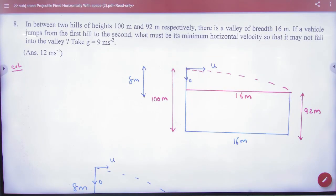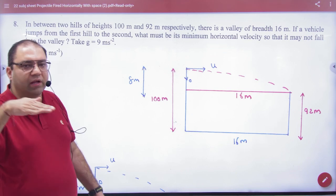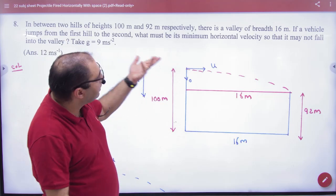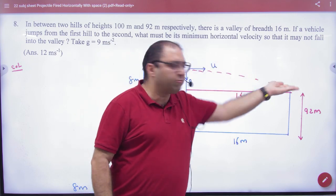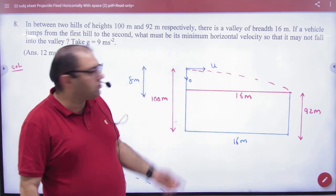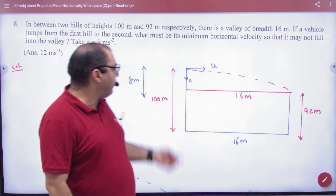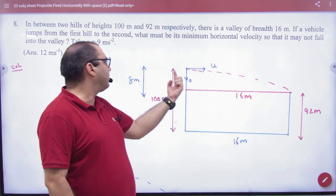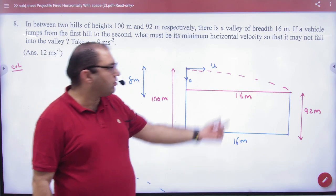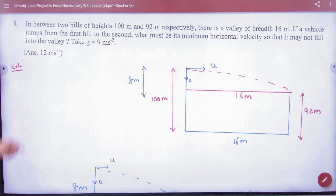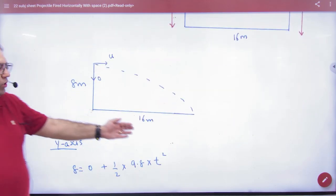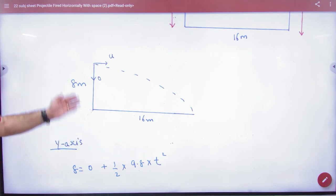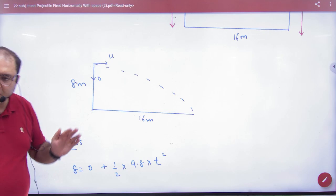Next question, no doubt made out. In eight, there are two hills, 100 and 92 meters. For any motorcycle or vehicle, they want to jump from this hill and reach this hill. So how much of its vertical journey will be? By 100, 92 minus 8 meters. And how much horizontal distance is? 16. So now your question is just enough. Eight meters is vertical, horizontal is 16 meters. How much is the initial vertical velocity? Zero. And the velocity is u.